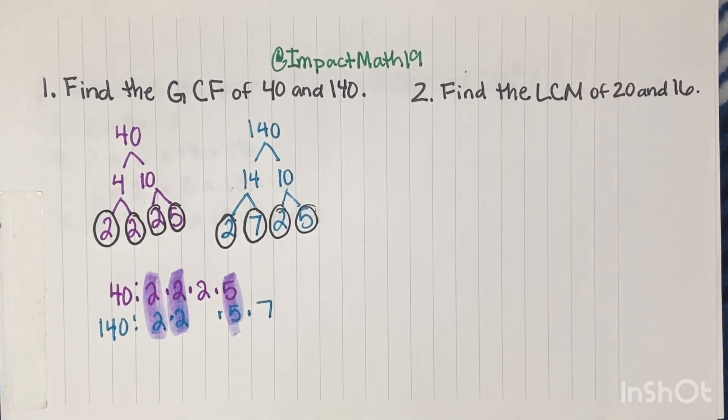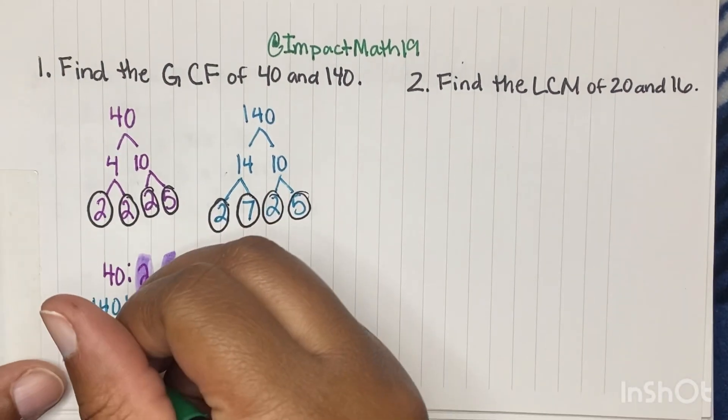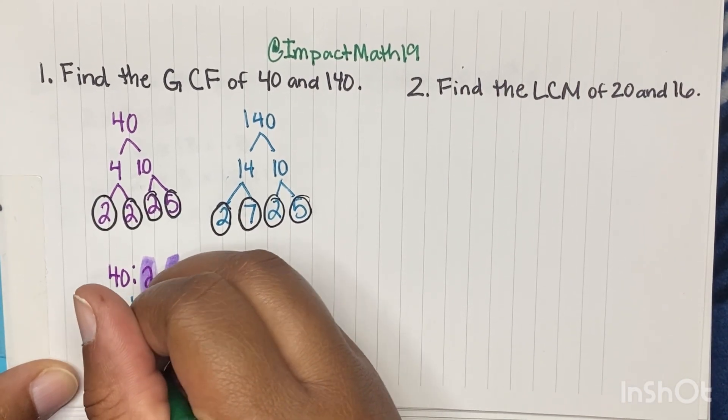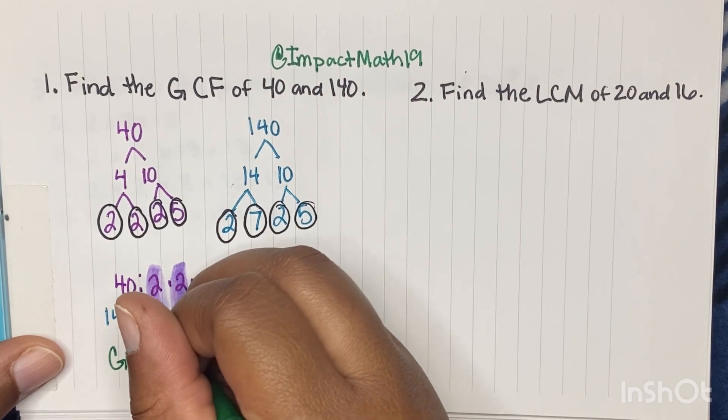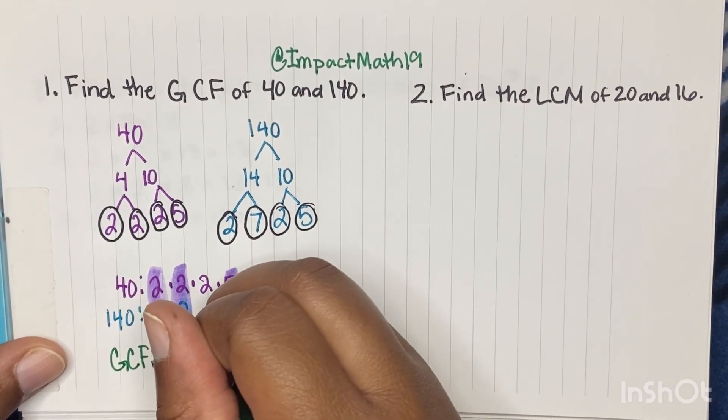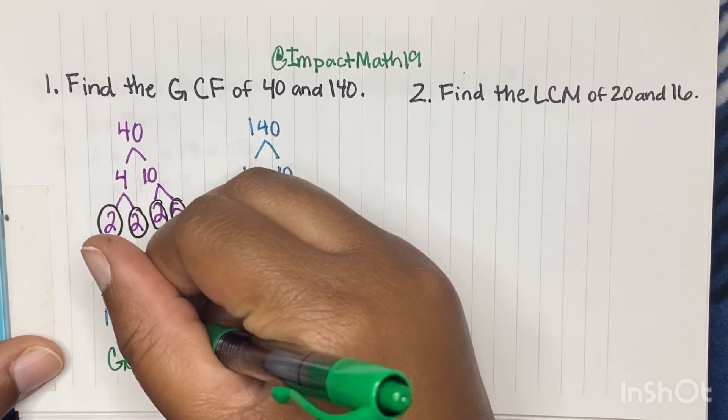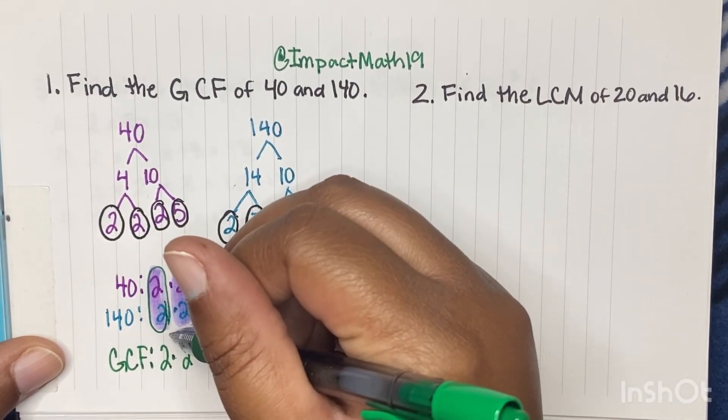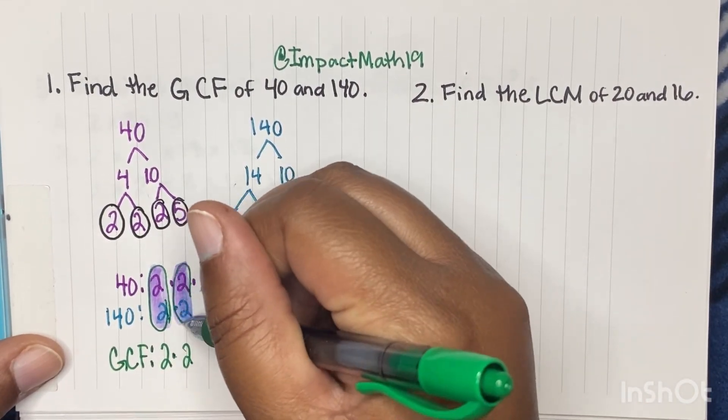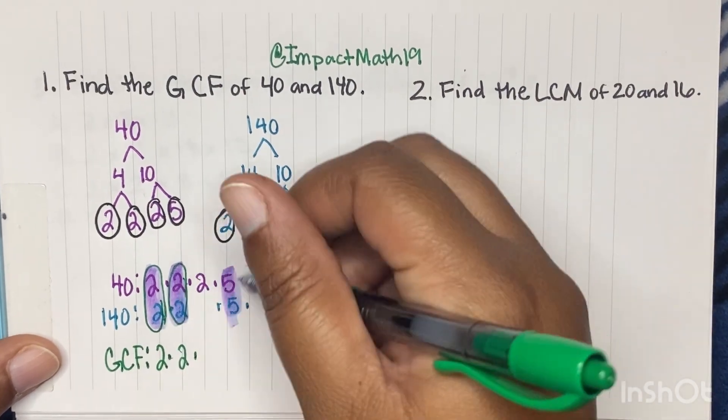So now we're looking for what they have in common. That's why it's called a greatest common factor. So they have a pair of 2s here, another pair of 2s, and a 5. So our greatest common factor, our GCF, would be 2 times 2.